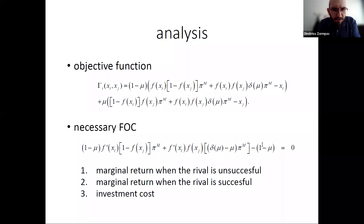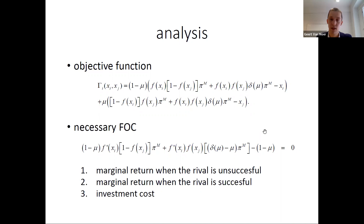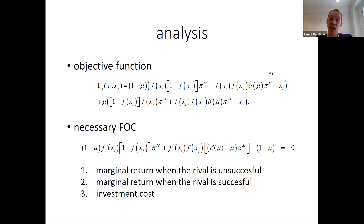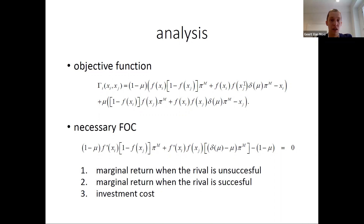A question from the audience: does the model already have an incumbent technology? In the baseline model there is no incumbent technology, so if both firms fail there is no profit. The presence of an incumbent technology — where firms earn positive profits even if both fail — will be addressed later in the seminar as an extension.